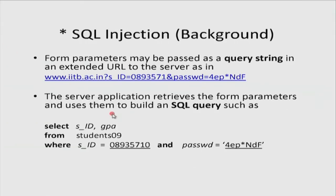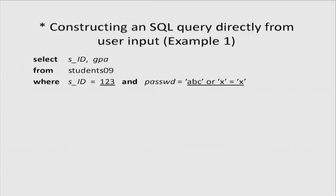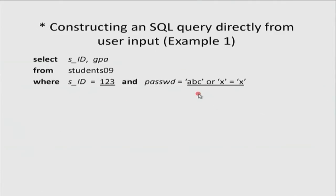Now, how can we abuse this? Instead of a normal password, the attacker may type something like: password equals 'this' OR x equals x. The SQL engine parses this as a Boolean expression: (a AND b) OR c. Since 'x equals x' is always true, the entire expression is true regardless of what was put in the password field. This might return the GPA for a student with a given ID, or it might return all student records and display them on screen.